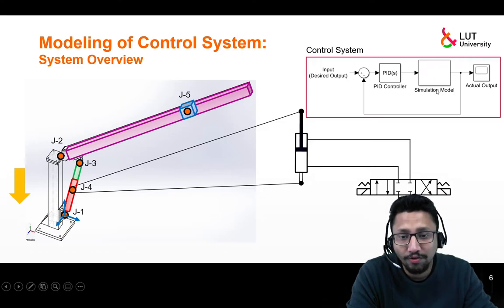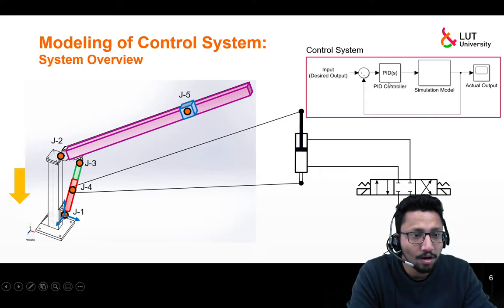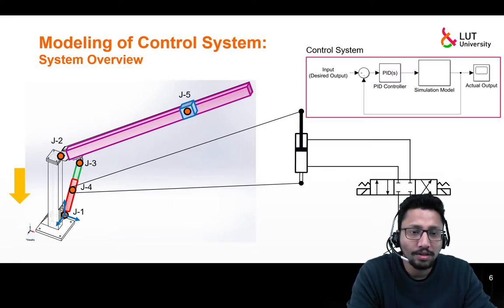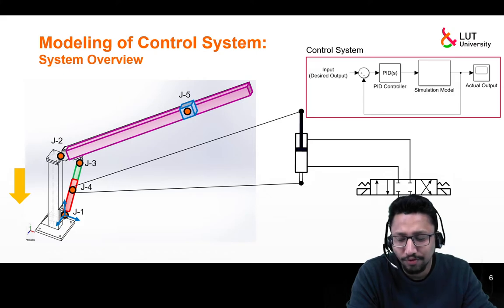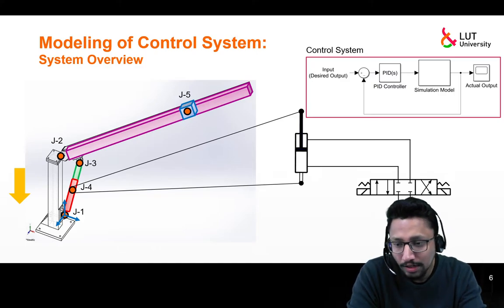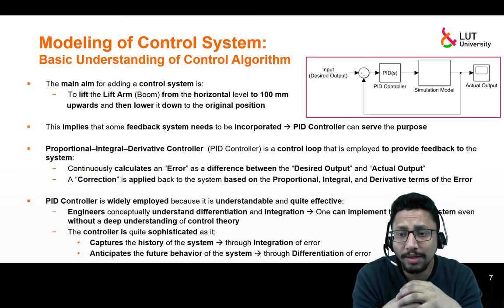In this video we want to focus on the control system. The simulation model contains everything we have modeled so far, and we need some sort of control system — for example a PID controller — where we provide corrections to the simulation model based on feedback received and based on some input. If you have no idea about control systems, do not worry; I will focus on the basic understanding first, then the equations governing this control system, and then how we carry out the modeling for our case study.